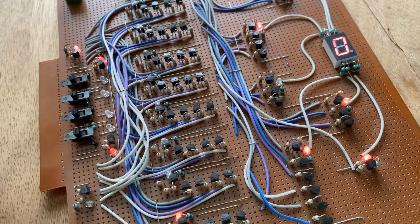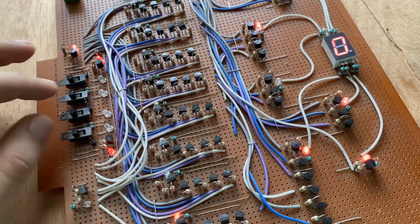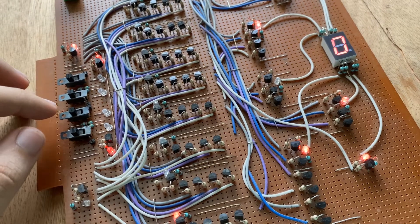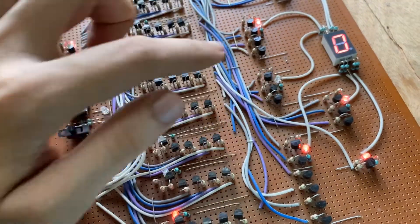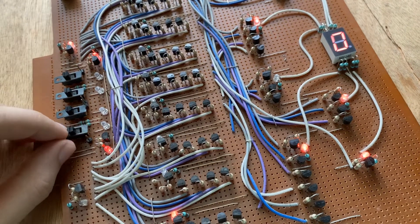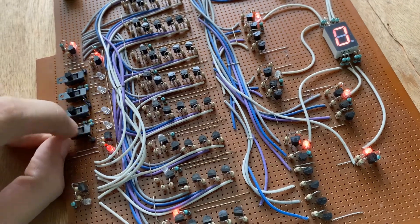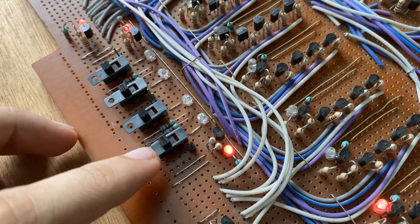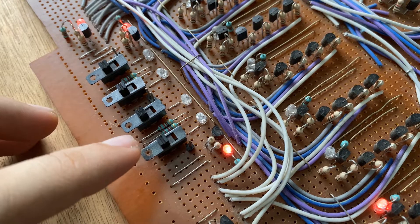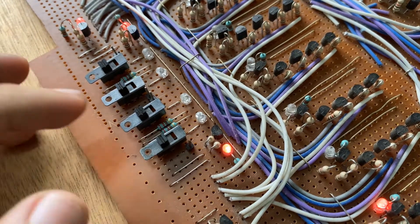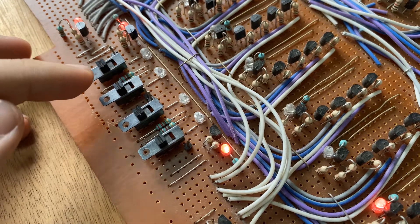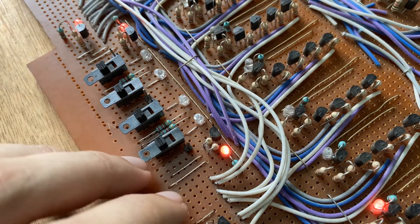So as we know that the function of BCD to 7-segment decoder is to convert 4-bit BCD code, that is the binary coded decimal code, into the seven digit binary code corresponding to the decimal digit. I have used four on-off sliding switches for four digit binary input. This represents the least significant bit, that is the LSB bit, and this one represents the most significant bit, that is the MSB of the BCD code.